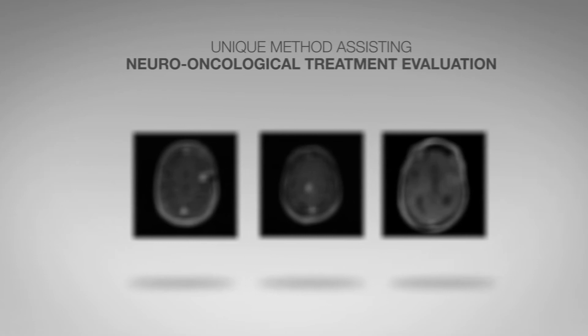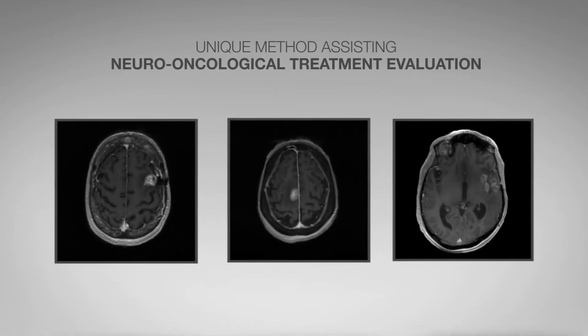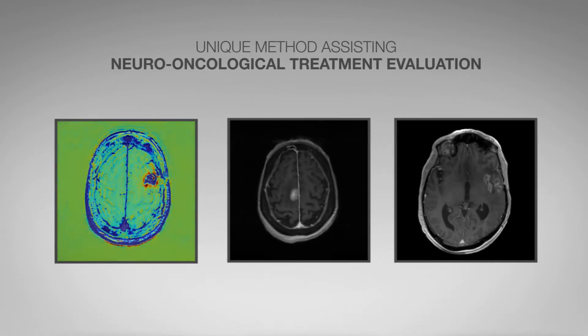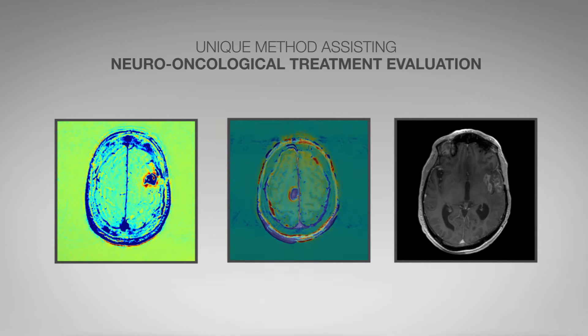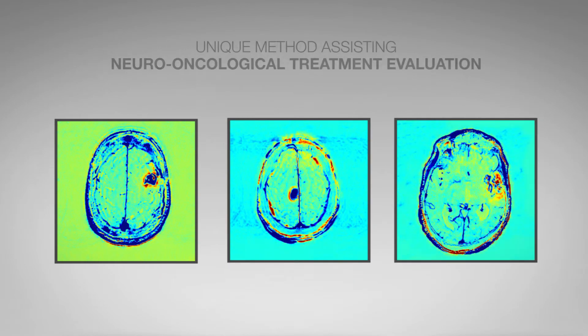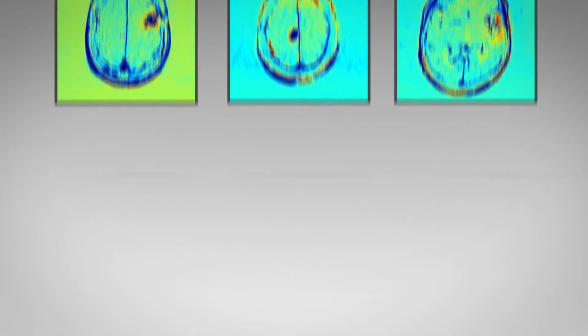Elements Contrast Clearance Analysis depicts contrast clearance and accumulation in the brain in high resolution, allowing for the differentiation of areas with high and low vascular activity.